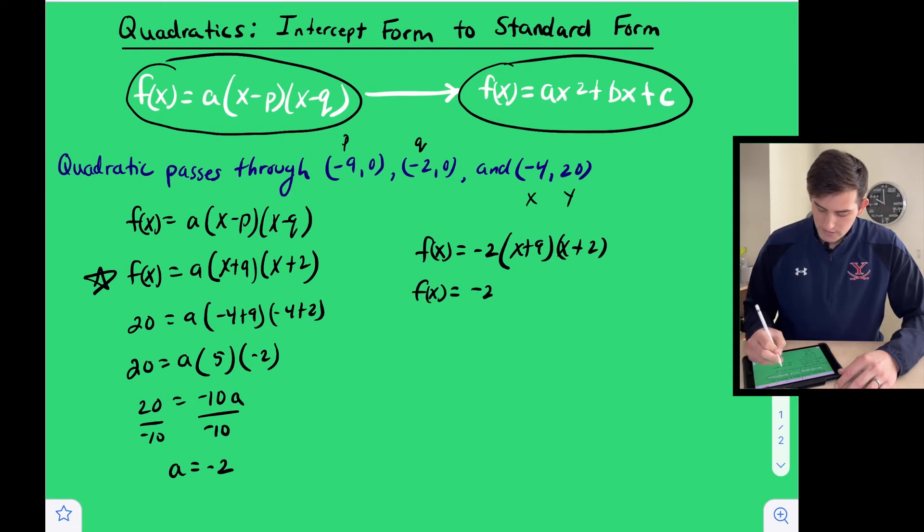So remember, this is x times x, so x squared; x times two, two x; nine times x, nine x; and nine times two, 18. So let's combine our like terms in the middle: negative two times x squared plus 11x plus 18.